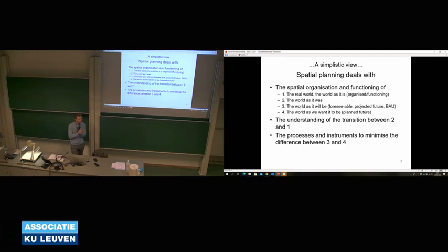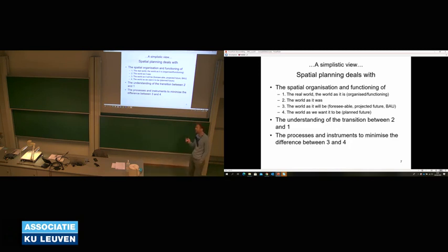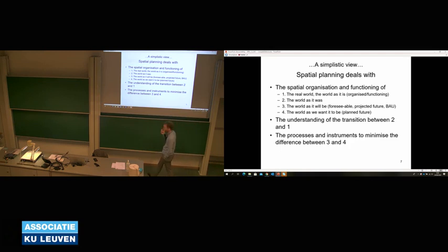GIS is a system or technology that will help you provide answers to questions by creating information and supporting decisions. As spatial planners, you will be interested in four different parts: the real world as it is, the real world as it was, and the factors causing the transition between these two. You can use this information and these trends to predict the world as it will be under a certain projected scenario — which can be the BAU scenario. BAU stands for business as usual. What if we just keep on doing what we are doing?